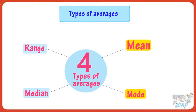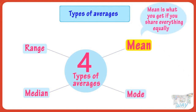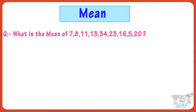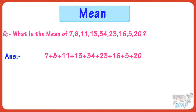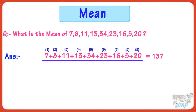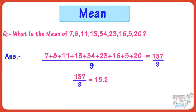Mean. The mean is what you get if you share everything equally. So let's find the mean of this list of numbers. Write out the list of all numbers and add them all. Here 137 is the sum of all numbers. Now count how many numbers are there in this list — we have 9 numbers. So we will divide 137 by 9 and we get 15.2.